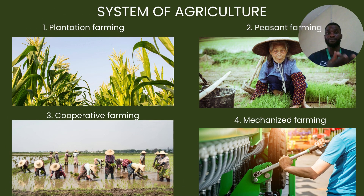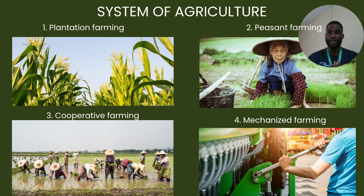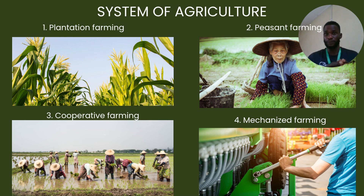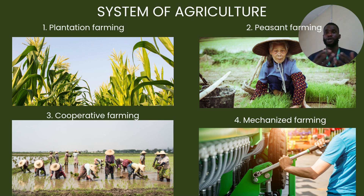Under systems of agriculture, we have plantation farming, which involves the cultivation of a particular crop making use of a large area of land and machines. A huge amount of capital is invested, with the objective of producing for sale. We also have peasant farming, otherwise known as subsistence farming, whereby the farmer and his family cultivate a small area of land basically for consumption.